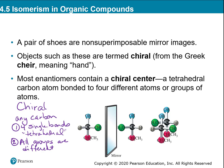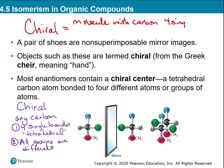An enantiomer is always going to have what's called a chiral carbon — the word chiral means hand. This is when you have a carbon with four single bonds where all the groups are different. That's the big kicker: they have to all be different.